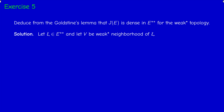How do we prove that? We have to prove that the closure in the weak-star topology of J of E is equal to E double star. For this, it's enough to prove that E double star is contained in the closure, because J of E and its closure all live in E double star.